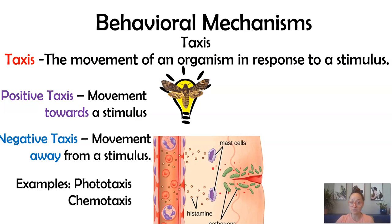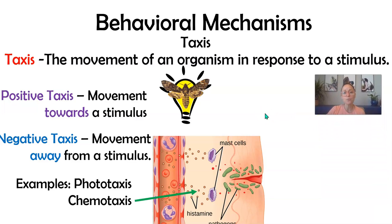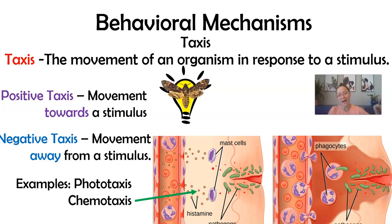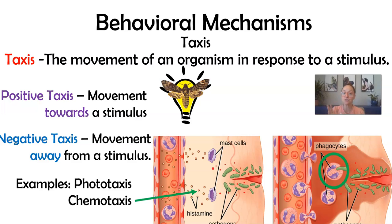We also have chemotaxis in our immune system. When your skin gets cut, the damaged cells release a chemical called histamine, which signals your white blood cells to move out of your circulatory system into the damaged or infected tissue to help clean up pathogens. This is also how sperm can find an egg — the egg releases certain chemicals that direct the sperm towards it, which is an example of positive chemotaxis.